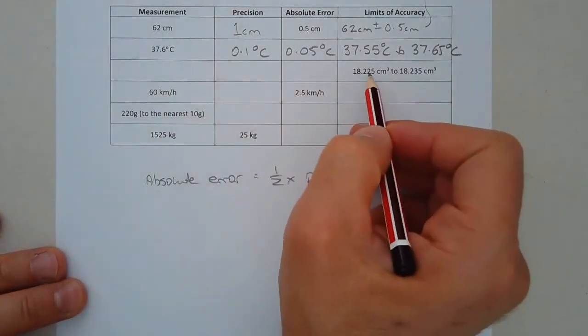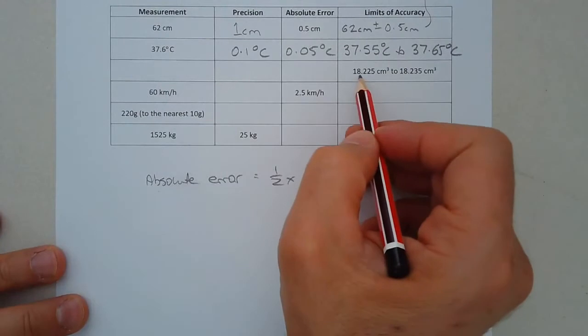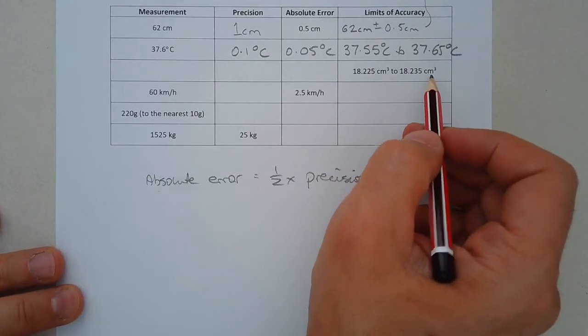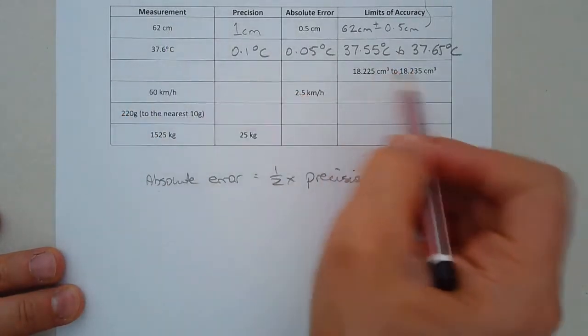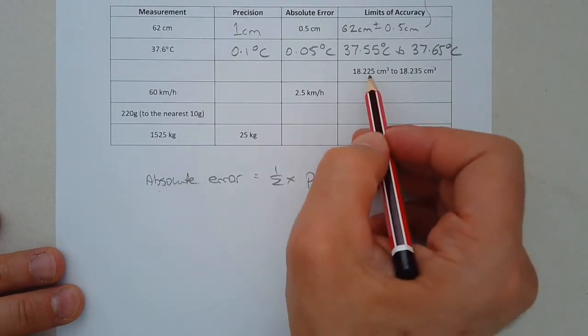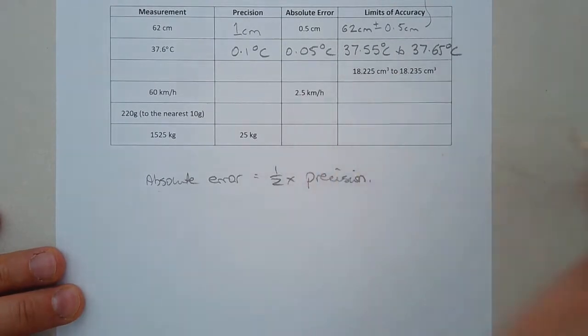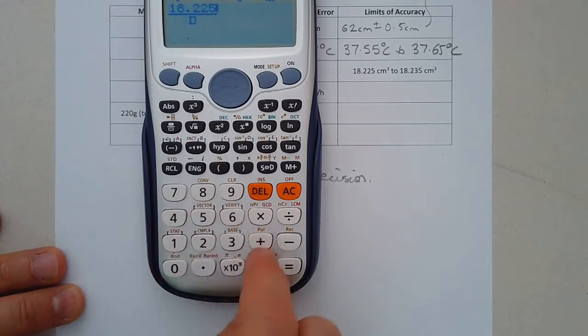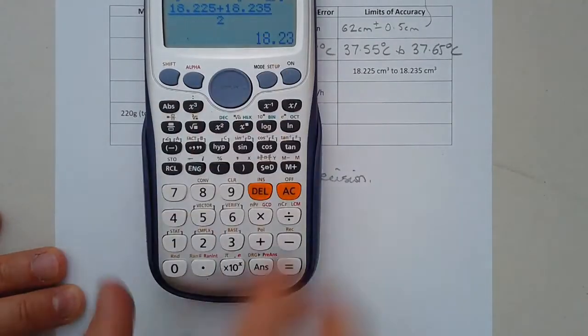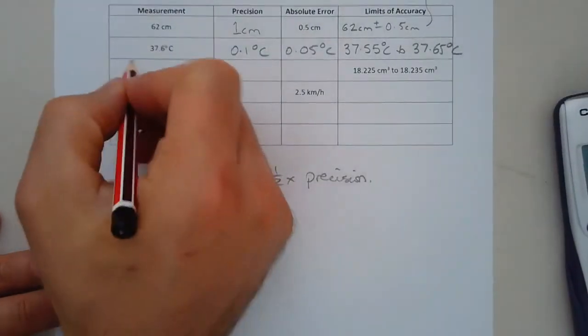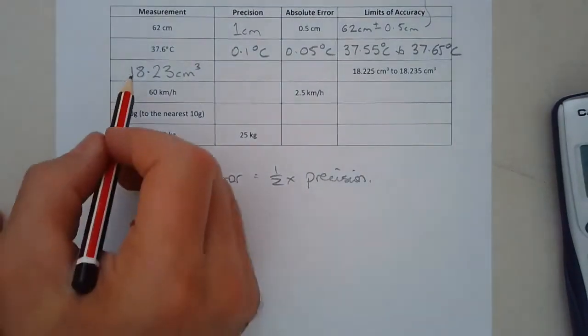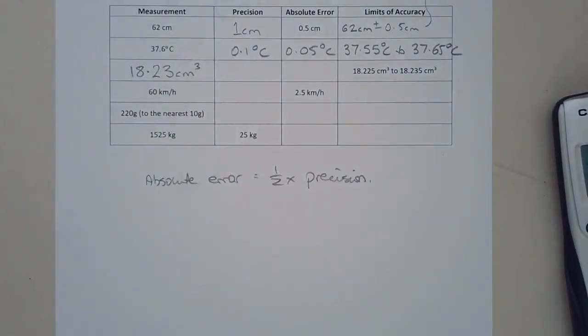Let's have a look at the next row. We've got nothing filled out except the limits of accuracy. 18.225 centimeters to 18.235 centimeters. We know that the measurement must be halfway in between those two readings. In fact, if you take the average of those two or the mean value of those two numbers, that'll be easy enough to do. So 18.225 plus 18.235 over 2, we get 18.23. So note that the measurement that must have been displayed on the measuring device must be 18.23 cubic centimeters.